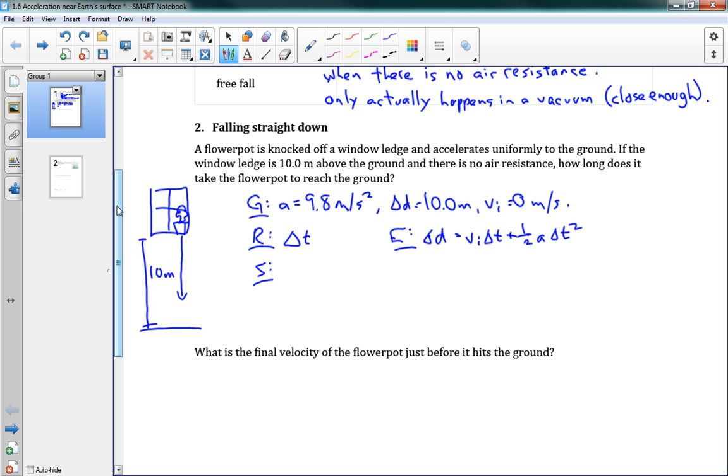Our solution: delta d equals 1 half... well, vi is 0, so this whole term just disappears. We have 1 half a is 9.8, and delta t squared. I'm going to rearrange this to find delta t. So delta t equals the square root of 2 delta d over a. The square root of 2 times 10 divided by 9.8. And our answer is 1.43 seconds.